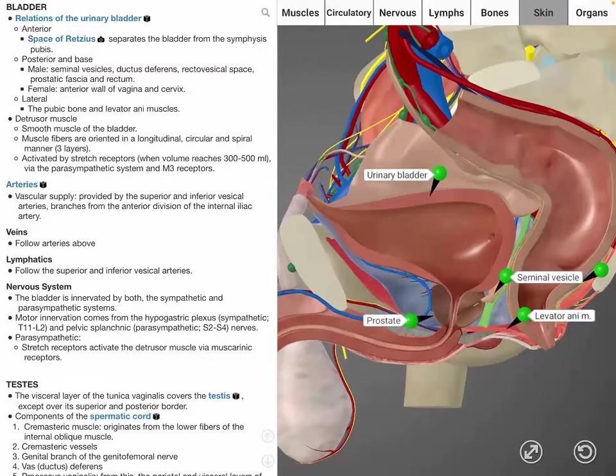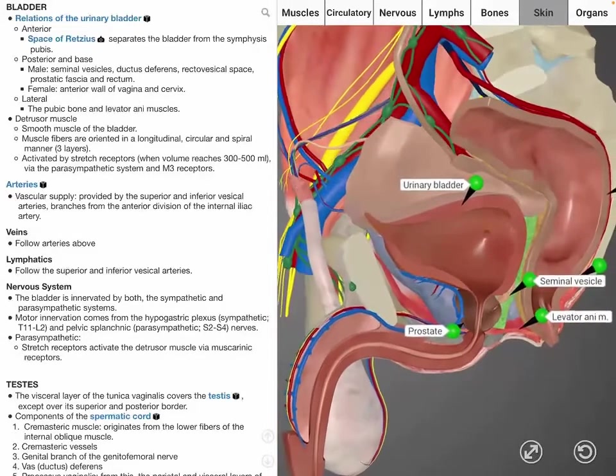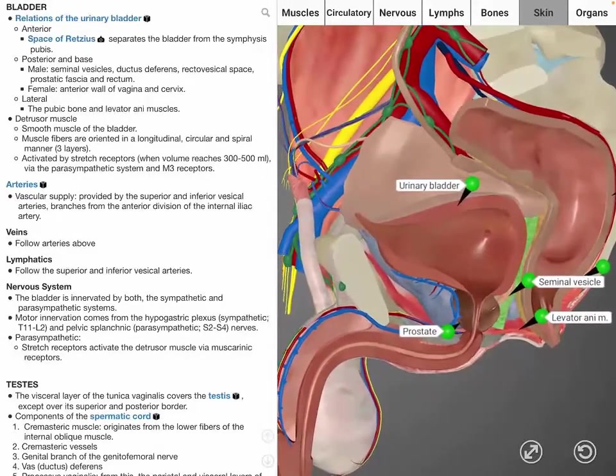The sympathetic fibers come from the hypogastric plexus at T11 to L2, and the parasympathetic fibers come from the pelvic splanchnic nerves of S2 to S4.